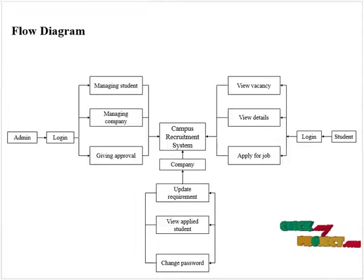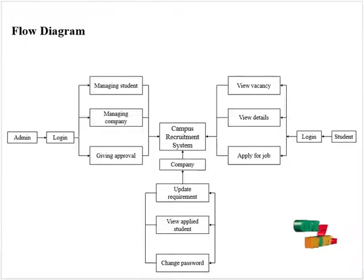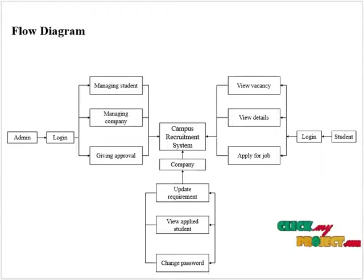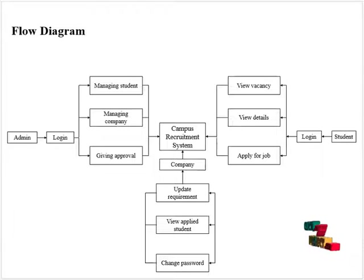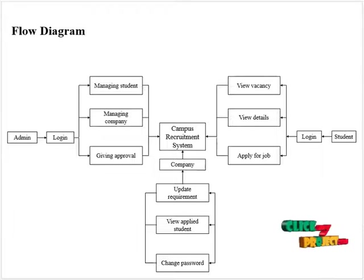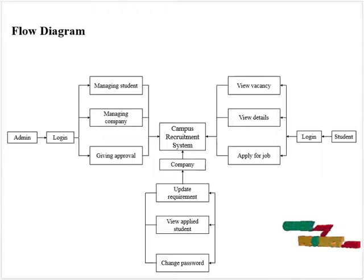This is our project flow diagram. We have three modules in our process: one is admin, another one is company, and then student. Admin is a person who can manage the student and the company by giving them approval once they are registered. Admin can also view the selected and non-selected students for the campus.